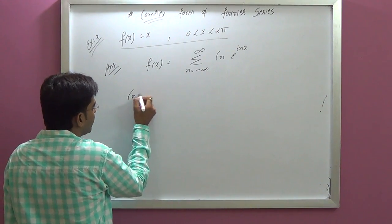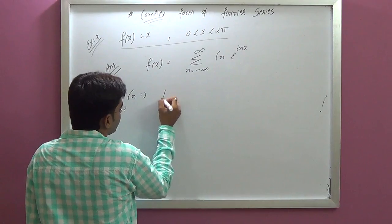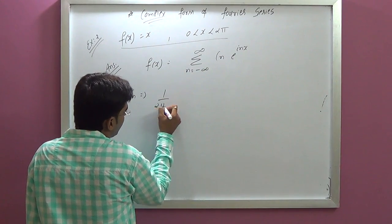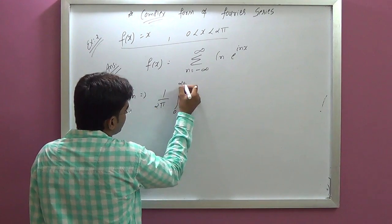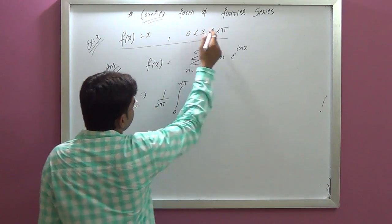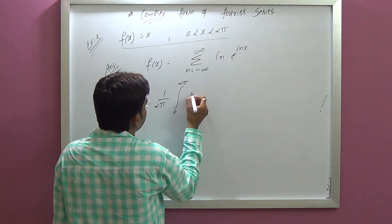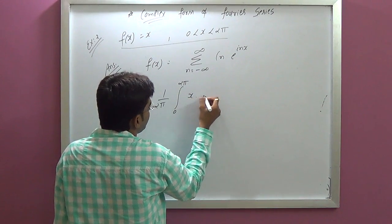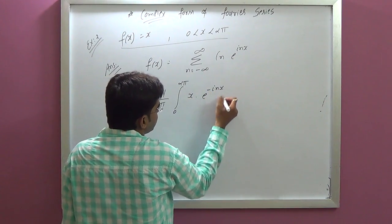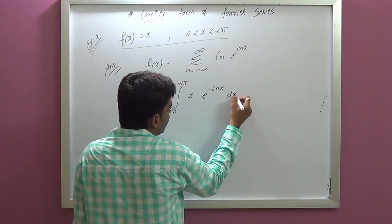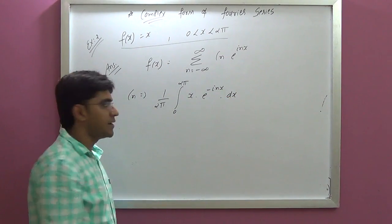Now, find Cₙ. The formula is Cₙ equals 1 upon 2π, integral from 0 to 2π — because our limit is 0 to 2π — of f(x) times e raised to minus inx, dx.